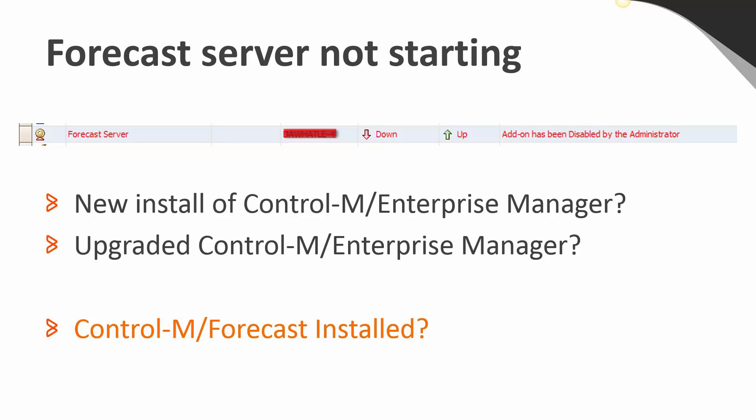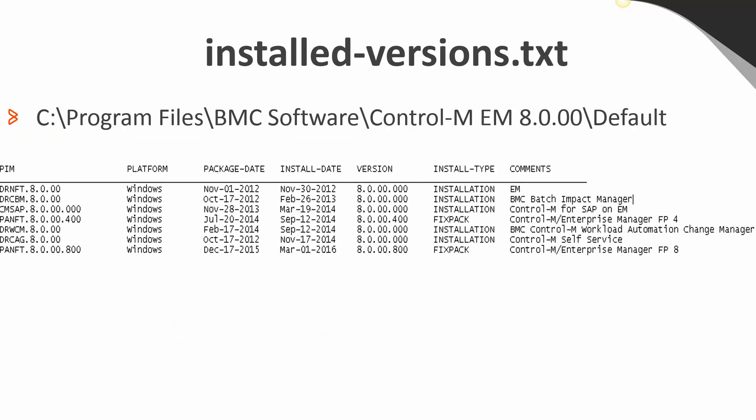As such, it needs to be installed before it can be started and used. This is true even if you've had Forecast installed in your earlier version of EM. You can easily tell if Forecast is installed by reviewing your installed_versions.txt file, located in the home directory of the EM server. For Windows, this is located by default in the directory like you see here, but check for installed_versions.txt wherever you have installed the EM server. In this example we see that Forecast is not installed, so you'll need to download it first and then install it.